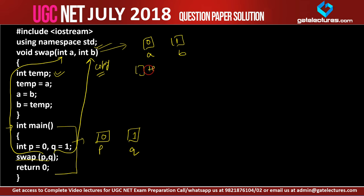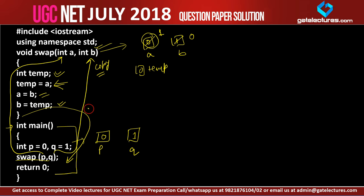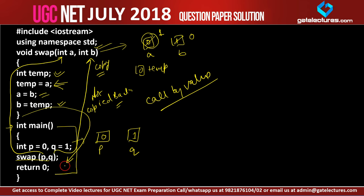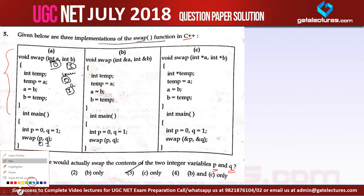Inside swap, variable A stores 0 and variable B stores 1. We declare an integer temp, set temp equal to A (so temp = 0), then A equals B (so A = 1), then B equals temp (so B = 0). After the swap A holds 1 and B holds 0. But as soon as this function finishes, the control returns to main and these values are NOT copied back. This is call by value — the values of P and Q will not change.